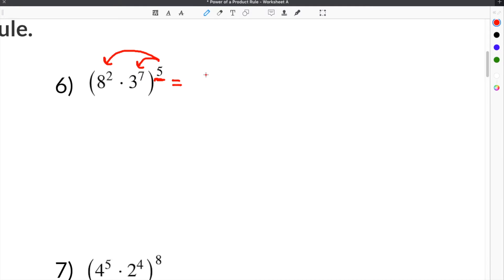So when we do that, we're going to write 8 squared in parenthesis. So that's our first term and it's being distributed with the 5. So the exponent of 5 has to go to the 8 squared. Then we have 3 to the seventh, and the exponent of 5 is also being applied to the 3 to the seventh. So we took the 8 squared and wrote it with the exponent of 5 on the outside, and we took the 3 to the seventh and rewrote it as 3 to the seventh raised to the fifth power.